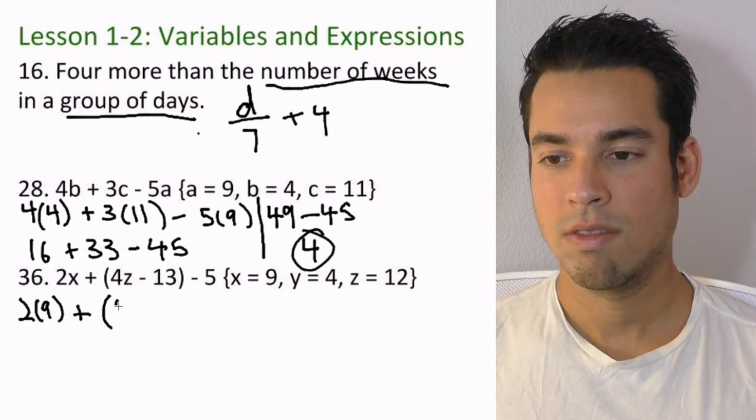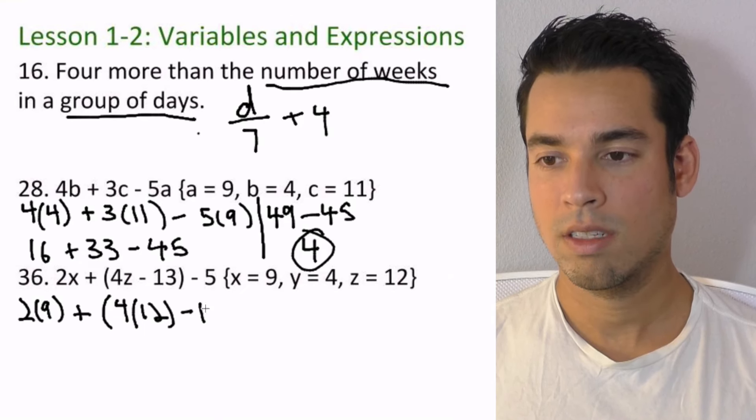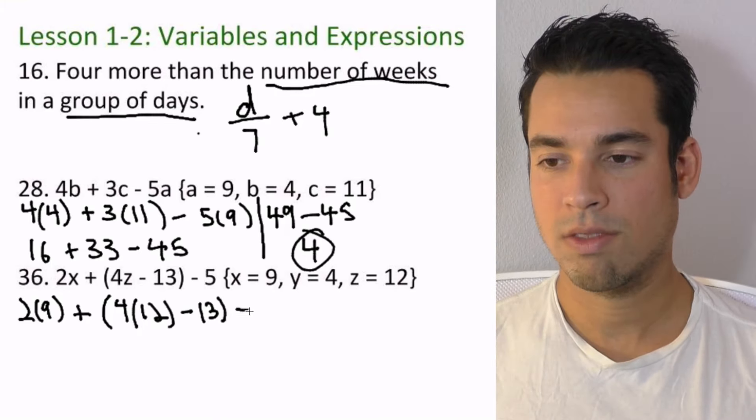And now we get parentheses, four times—what's our z? That's 12—minus 13. We still got to get that outside parentheses, it's still there, and then we got a minus five at the end.